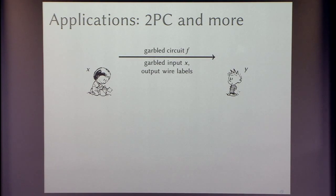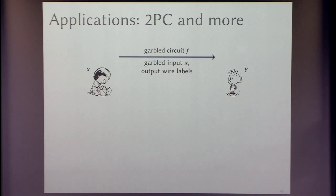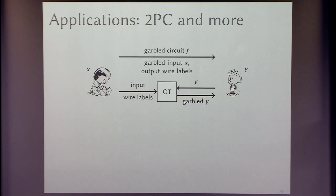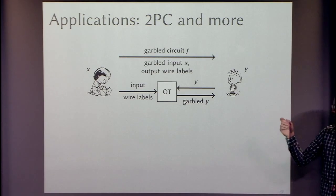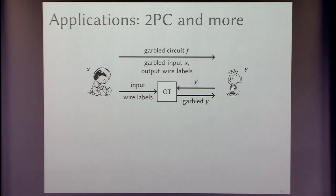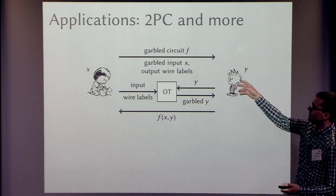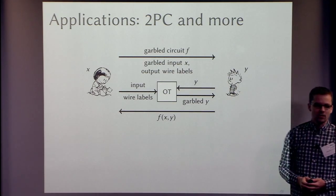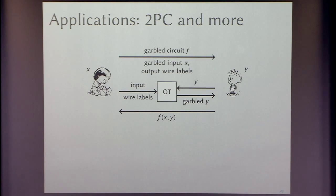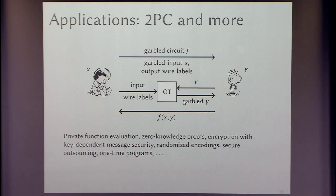Alice sends the garbled encoding of her input and the wire labels for the output wires. We need to arrange for Bob to pick up a garbled encoding of his input, which is easy to do with one-out-of-two oblivious transfer. Once Bob has the garbled circuit and the garbled encoding of the input, he can evaluate the circuit, decode it with the output wire labels, and send back the result. This is a secure protocol in the presence of semi-honest adversaries. There are many more applications of garbled circuits, both in theory and in practice.